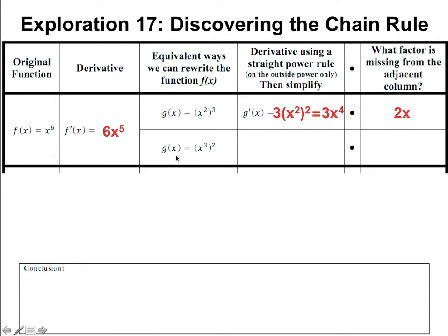For g of x equals x cubed squared, bring down the 2, leave x cubed alone, and the power becomes 1. That gives 2x cubed. To get 6x to the 5th from 2x cubed, it looks like we're missing a factor of 3x squared.